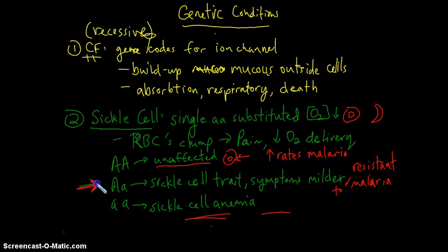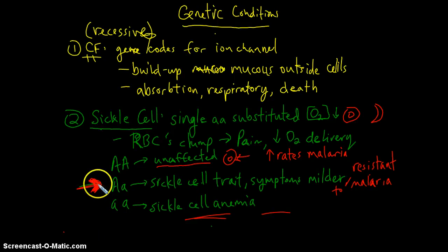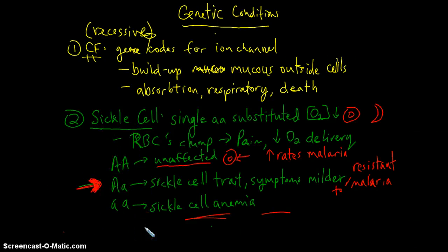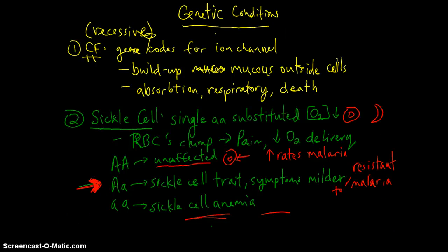Evolutionarily, individuals who are heterozygous are favored because they don't have severe symptoms of sickle cell disease and they have the ability to resist malaria. This helps explain why sickle cell disease is quite prevalent in the African American community in the United States, because people with ancestry in equatorial regions are more likely to be heterozygous, since nature tends to select individuals who are heterozygous. Fascinating stuff.